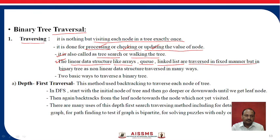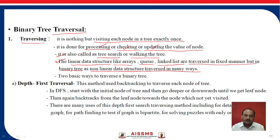In a binary tree, as a non-linear data structure, traversal can be done in many ways. Sometimes the question is asked: is a binary tree a linear data structure? The answer is no — binary tree is a non-linear data structure, whereas arrays, queues, and linked lists are linear data structures.